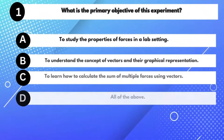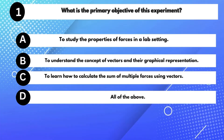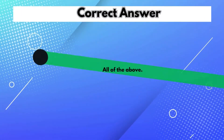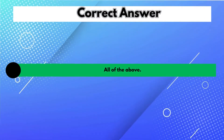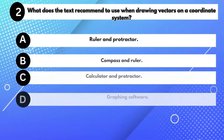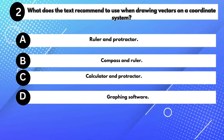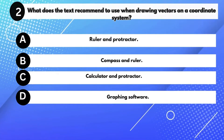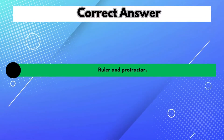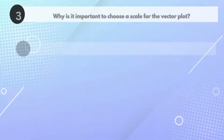What is the primary objective of this experiment? Answer D: All of the above. What does the text recommend to use when drawing vectors on a coordinate system? Answer A: Ruler and protractor.